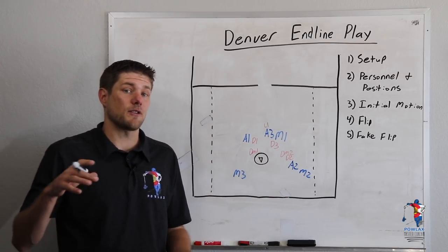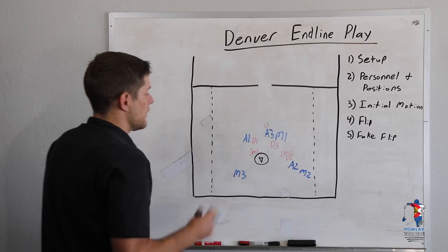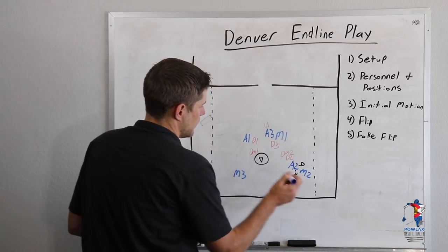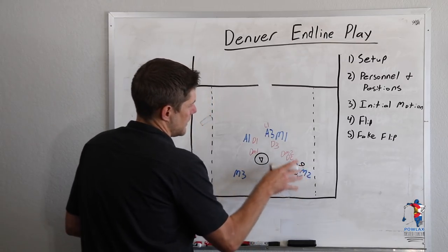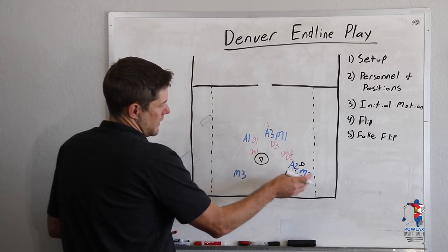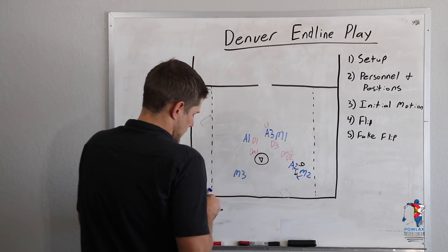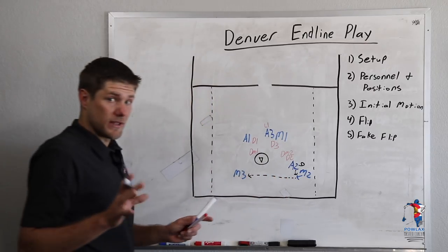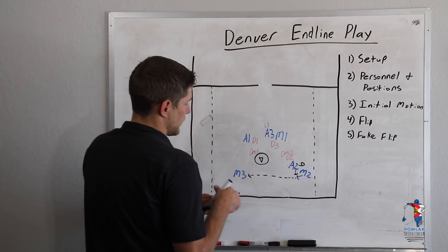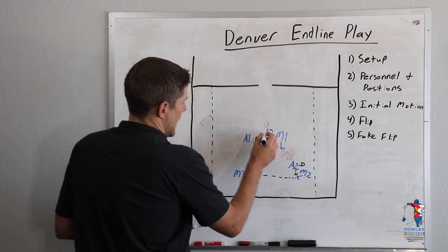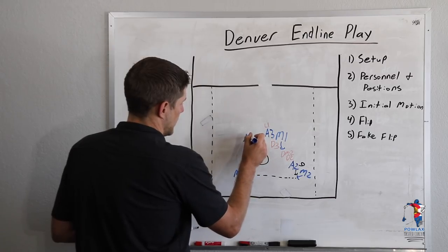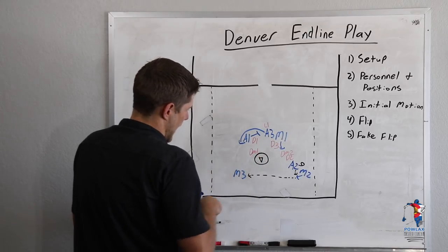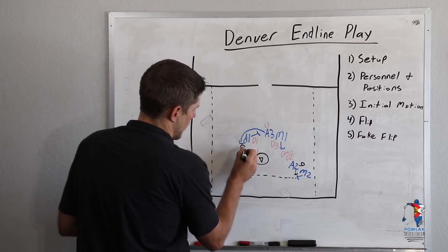Now we're going to get into exactly how the play finishes up when Denver runs it. So first, A2 still has the ball, but as these two cross, he's going to flip the ball to M2 as they cross. And this is why M2 has to stay wide is so that the defenseman doesn't follow him there and so he can receive this flip. M2 is then going to throw a pass immediately to M3. As all of this is happening, A3, who just picked for M1, M1's going to continue his cut, A3 is now going to cut around a pick set by A1 around here and then receive a pass from M3, catch the ball, and shoot.